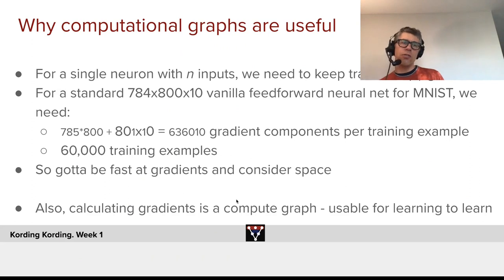Why are they so useful? For a single neuron with N inputs, we need to generally keep track of O of N gradients. For a standard vanilla feed-forward neural network for MNIST, which is 784 times 800 times 10, we thus need all the 600,000 gradient computations. That's an awful lot of calculations. And we might have 60,000 training examples. So we better be fast. And as I told you earlier, in lots of ways, the rate-limiting factor for us when we do deep learning is being fast.